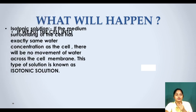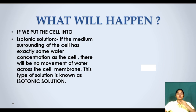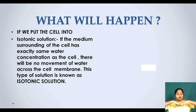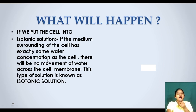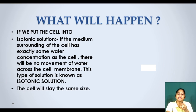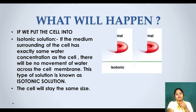Next is isotonic solution. Iso means same. If the medium surrounding the cell has exactly the same water concentration as the cell, there will be no movement of water across the cell membrane. The cell will stay the same size — it will remain normal, just as it was before.